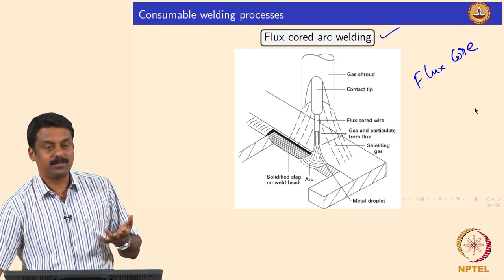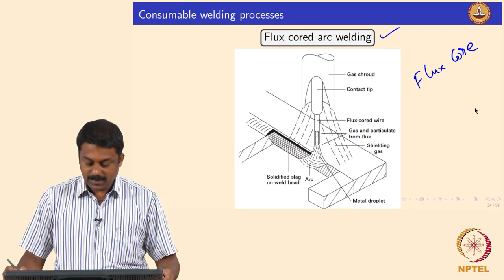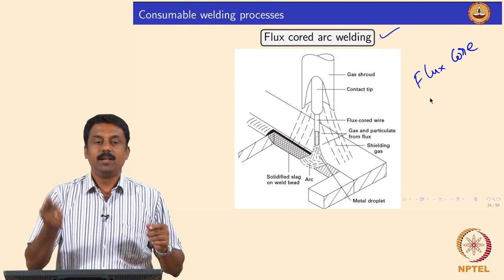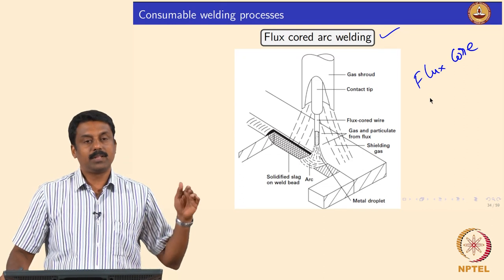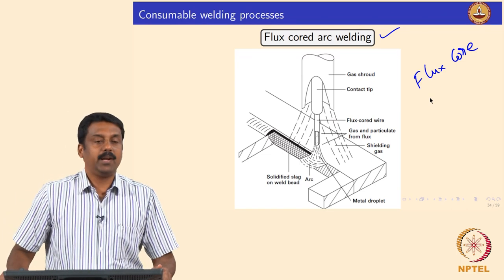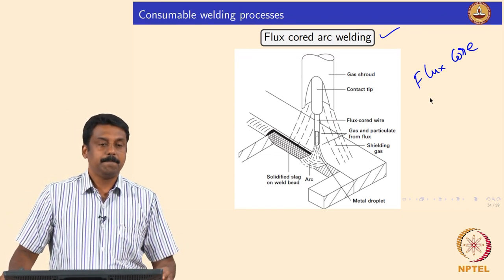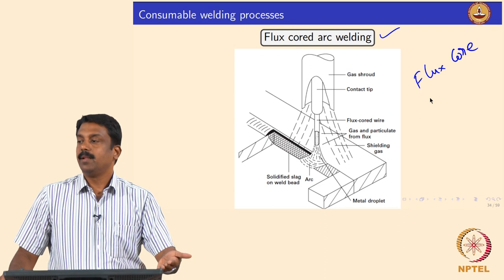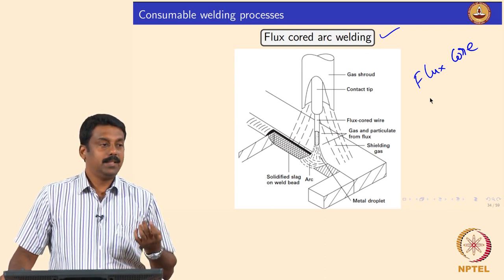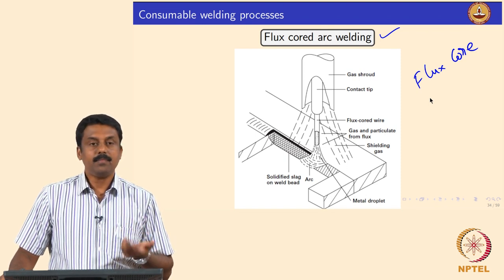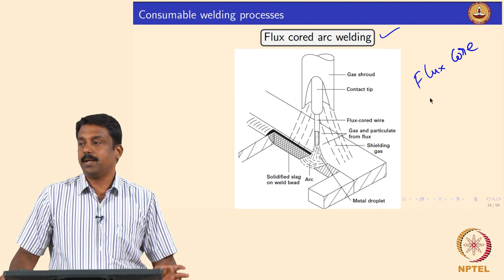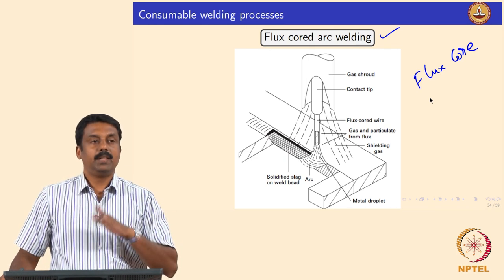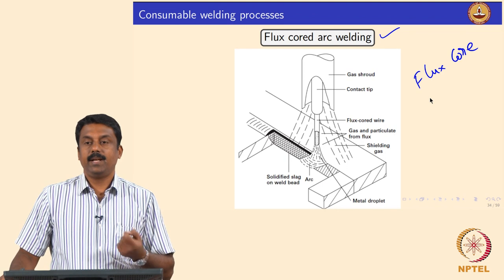These kinds of electrodes are known as flux cored electrodes. Tubes can be made as long as possible and can be spiral wound, so these electrodes can be continuously fed and we can automate the process, same as GMAW wire. We can achieve the automation characteristic of GMAW plus the advantage of flux-controlled shielding gas generation and metal transfer achieved in MMAW.